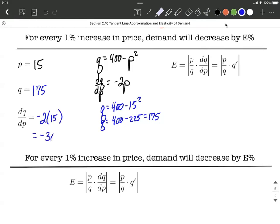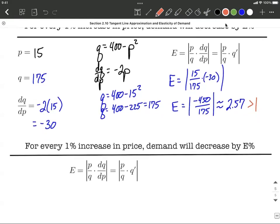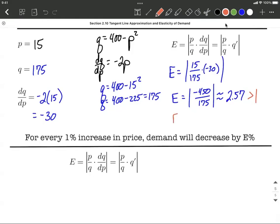dq/dp is going to be negative 2 times 15, or negative 30. So elasticity of demand at $15 is going to be 15 for p, 175 for q, multiplied by negative 30. That's going to be negative 450 divided by 175. As we take the absolute value and make it a decimal, that's approximately 2.57. The magic value we're comparing this to is 1, and that's bigger than 1. So that's telling us that if we want to maximize our revenue, we're charging too much. When it's bigger than 1, we call that elastic, and that tells us we should lower those prices.